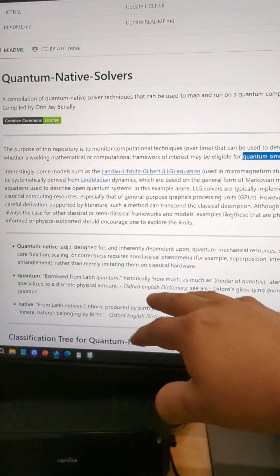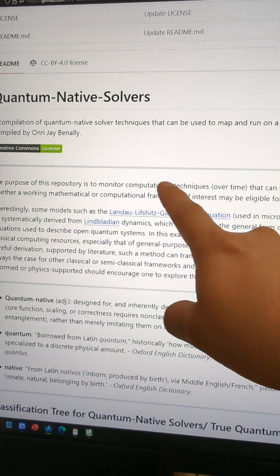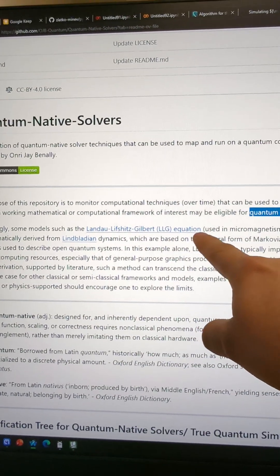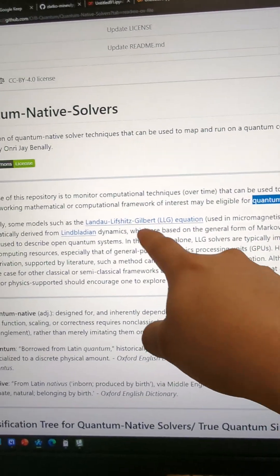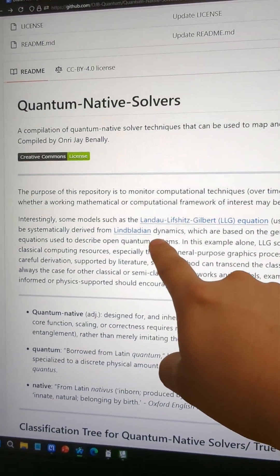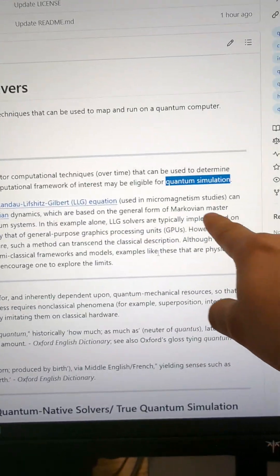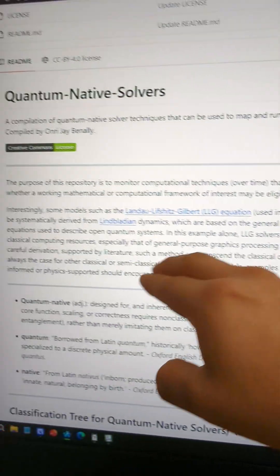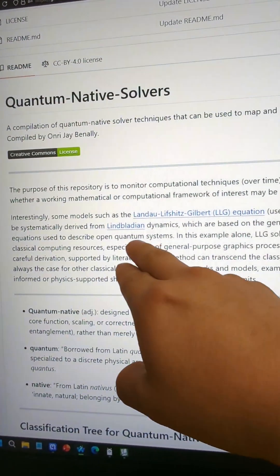And there are various examples, and there's one that I really like. It's called the LLG equation that is formed or systematically derived from Lindbladian dynamics. So Lindbladian here, it's a general form of a master equation for open quantum systems.